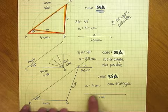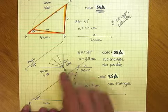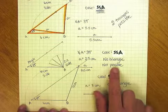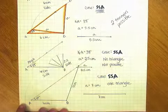If the side is too long, you're just going to get one triangle. If the side is too short, you're going to get no triangles. And if it's just right, you can get two triangles possible.